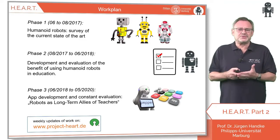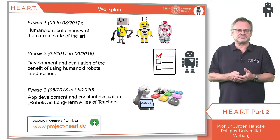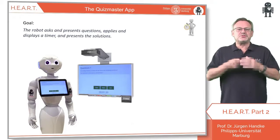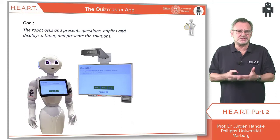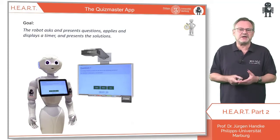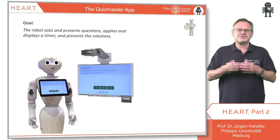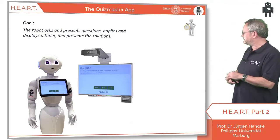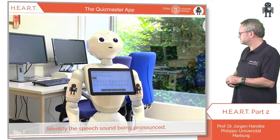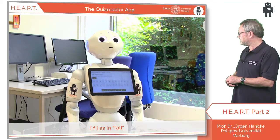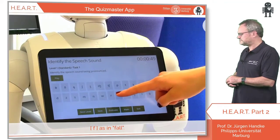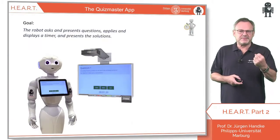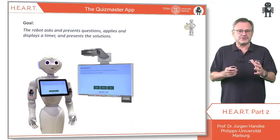By doing this, we can make humanoid robots our true long-term allies. So let's look at our operational robot apps ready for use in class. The first app turns our robot into a quiz master, who asks and presents questions, applies and displays a timer, and after a predefined time presents the solution. Here is a demo.